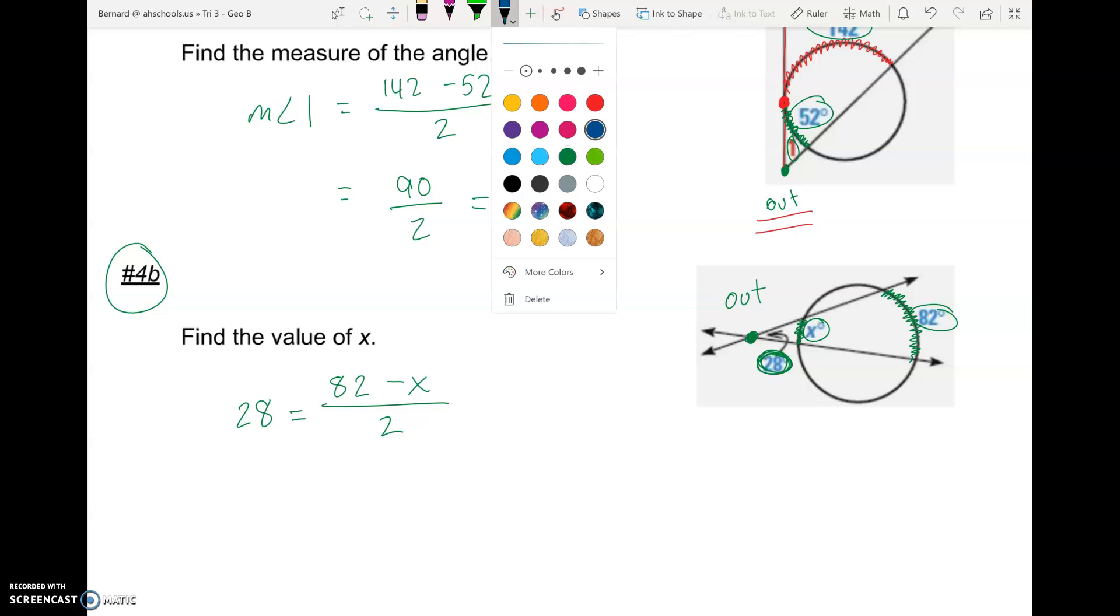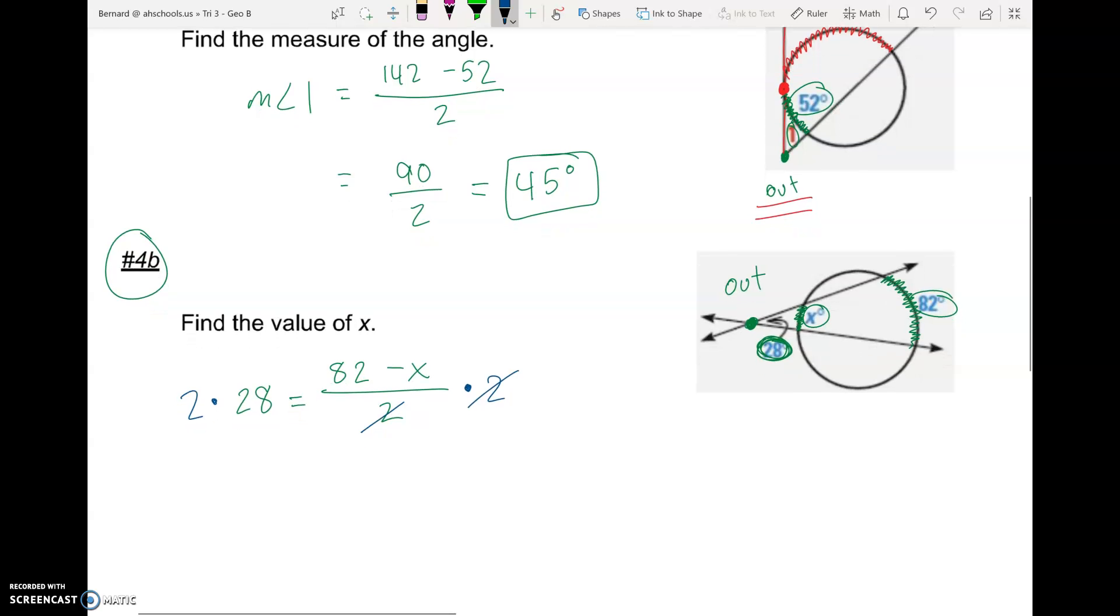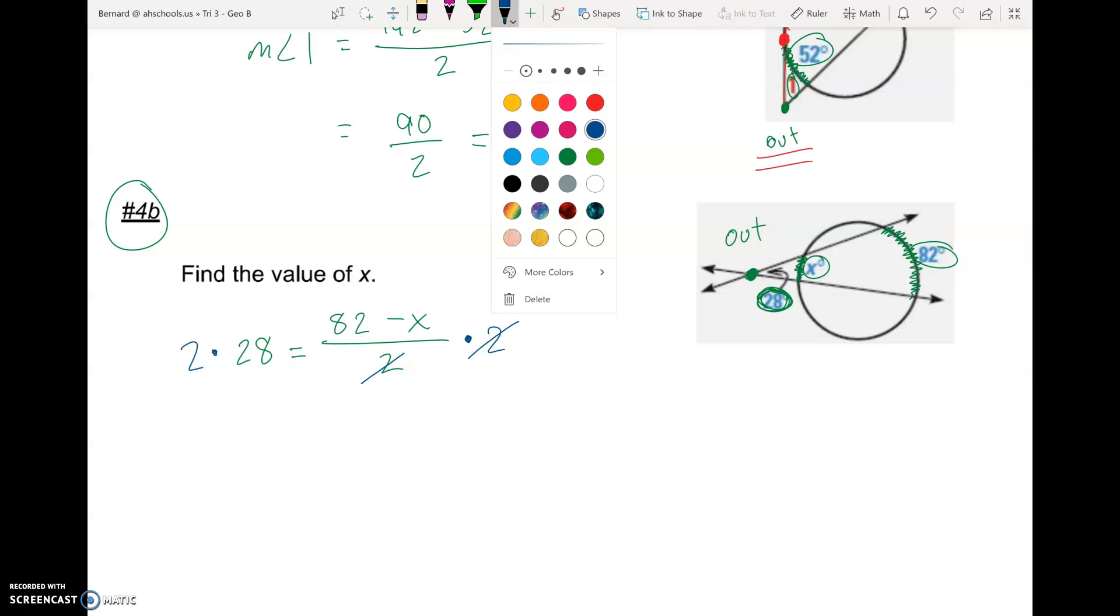And then we need to get at x here. So we'll times both sides by 2 so that we can cancel the denominator of that fraction. And that'll just leave us with what's on top on the right side. So 82 minus x. On the left, we need to actually do 2 times 28. And that is 56. And so it equals 56.